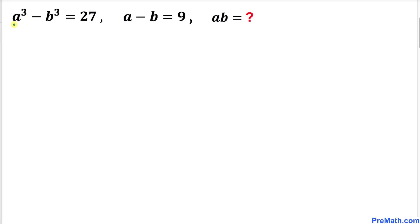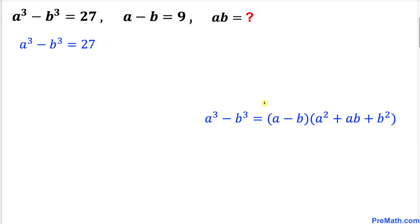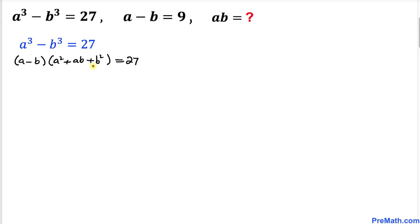Let's focus on the first equation: a cubed minus b cubed equals 27. Let's recall the famous identity: a cubed minus b cubed equals a minus b, times a squared plus ab plus b squared. So on the left hand side I can write a minus b times a squared plus ab plus b squared equals 27.